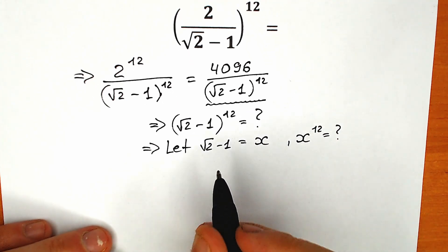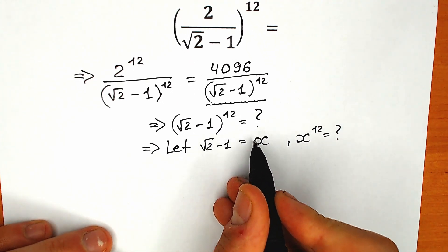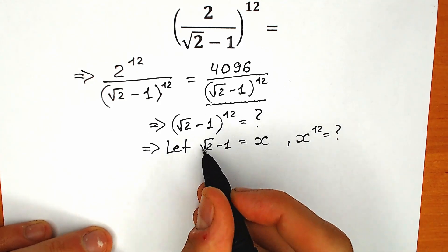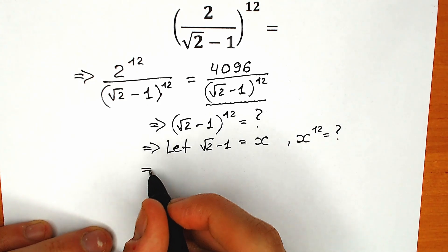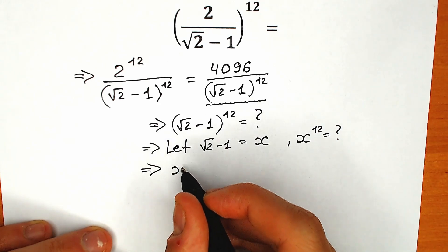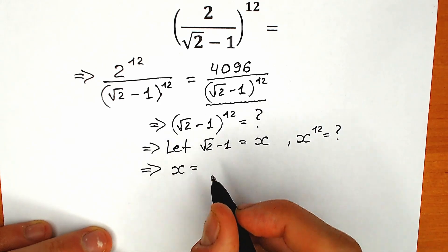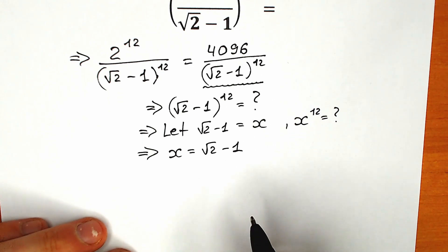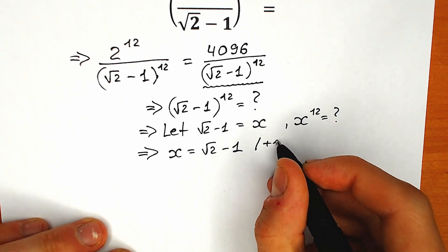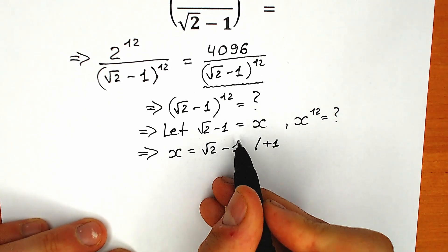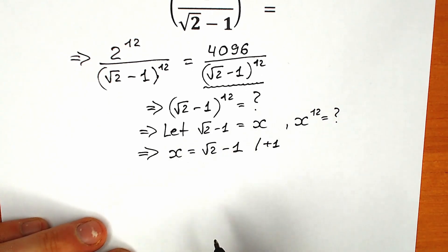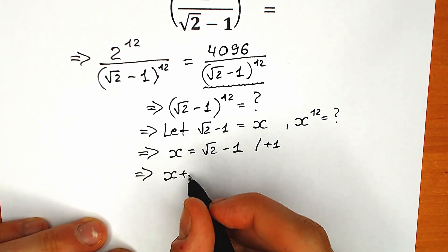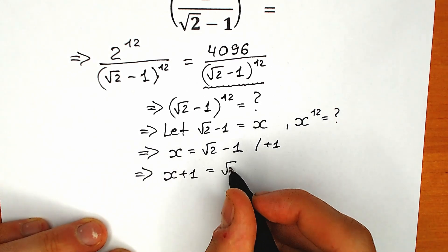Right now let's rewrite this expression. Let's write x on our left side and the constant on the right side. So we have x equal to square root of 2 minus 1. Now let's add 1 to both sides. As a result we cancel it from the right side, and it appears on the left side. So we have x plus 1 equal to square root of 2.